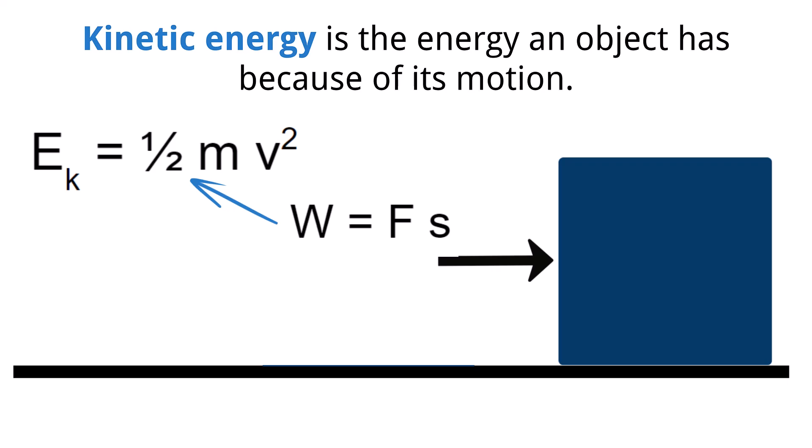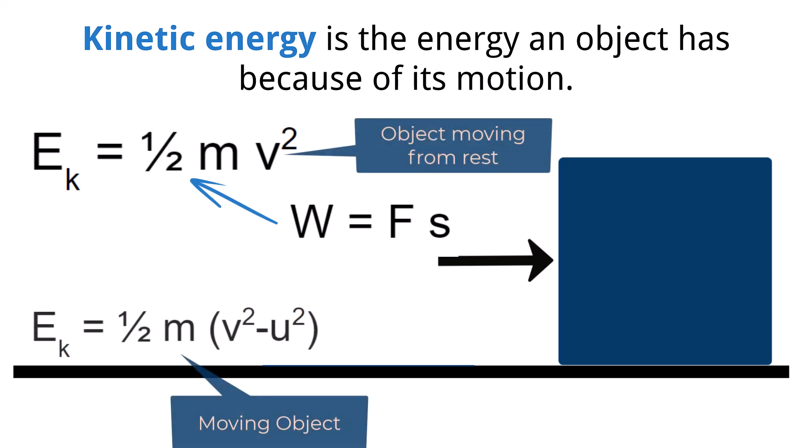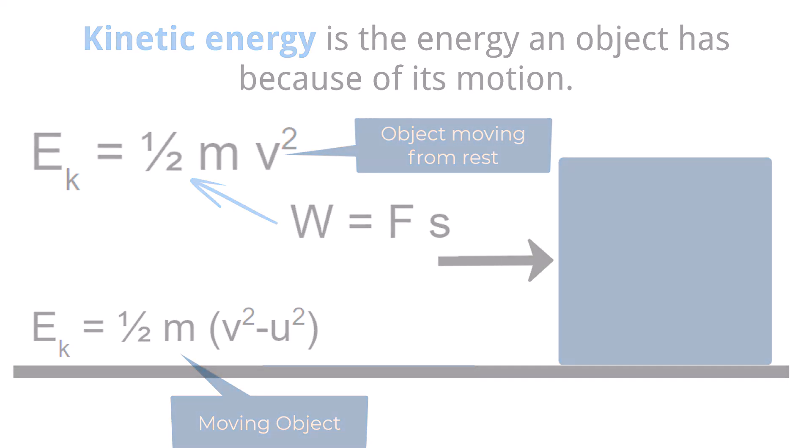This equation slightly changes if the object is already in motion. The change in velocity will solve for the change in kinetic energy. Therefore, for objects that are moving, the equation is one half the mass of the object times the quantity of the final velocity squared minus the initial velocity squared.